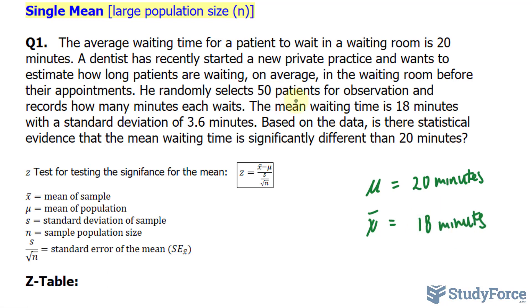In addition, he actually samples 50 patients, which is large enough to be considered a large population. Generally, if n is more than 30, it's large. So, here, n is equal to 50 people.